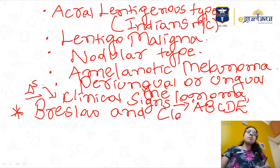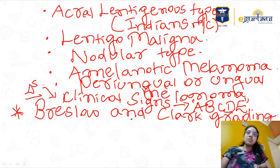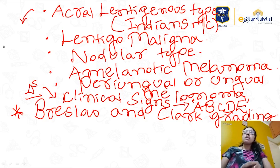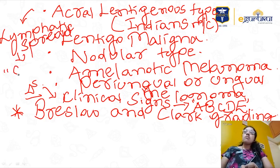There are two histopathological gradings: Breslow and Clark's grading — you should remember these. Melanoma most commonly spreads through the lymphatic route, where you will get satellite nodules or satellite lesions and enlarged lymph nodes along the course of the melanoma.